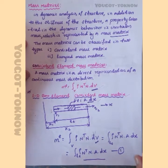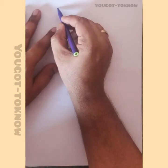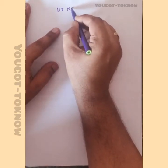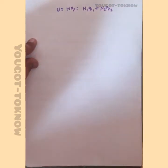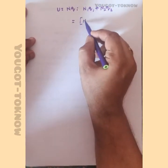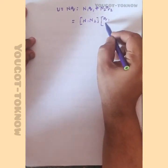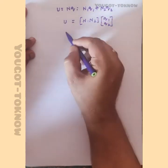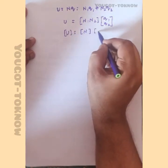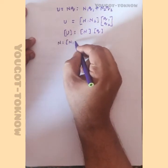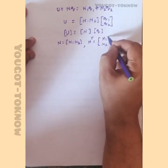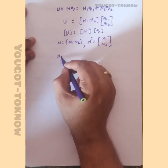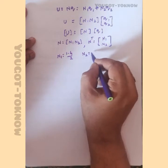From this equation, we identify N for the bar element. We know that u equals N1·q1 plus N2·q2, which in matrix form is [N1 N2]{q1 q2}. So N equals [N1 N2]. For the bar element, the shape functions are: N1 equals (1 minus zeta) divided by 2, and N2 equals (1 plus zeta) divided by 2.